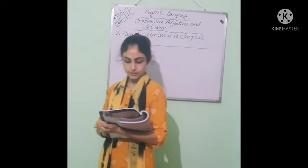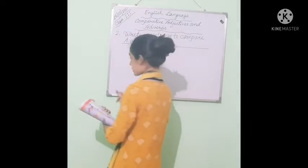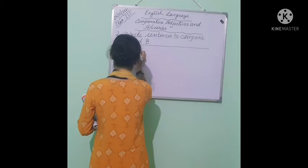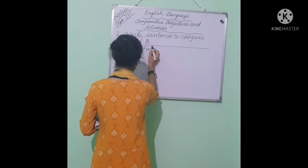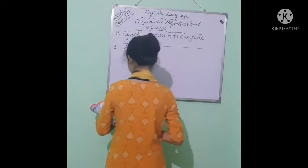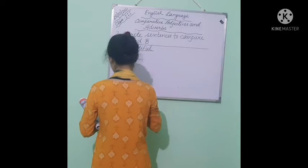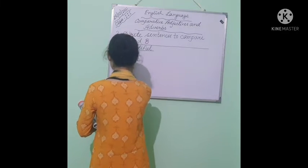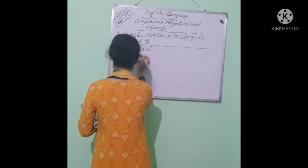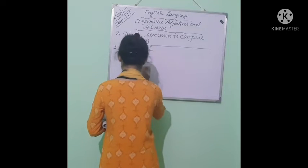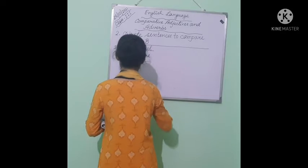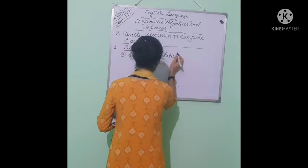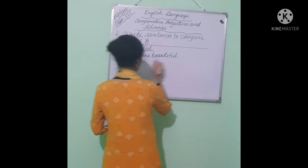Here are some pictures written below. I am writing sentences using these words. First: the word is beautiful. Compare the sentence. B is more beautiful than A. Beautiful is a long word, so the comparative degree of beautiful is more beautiful. B is more beautiful than A.